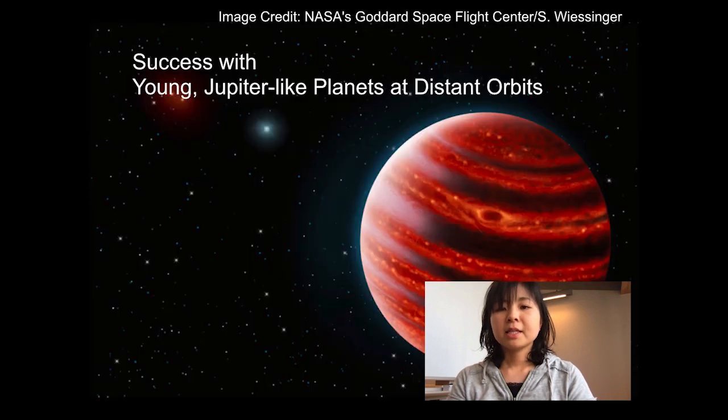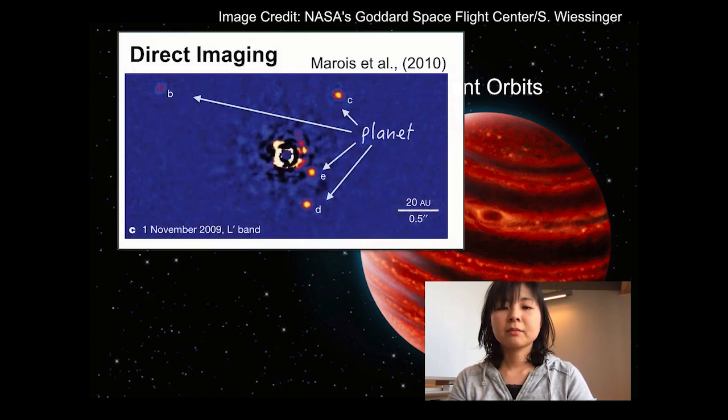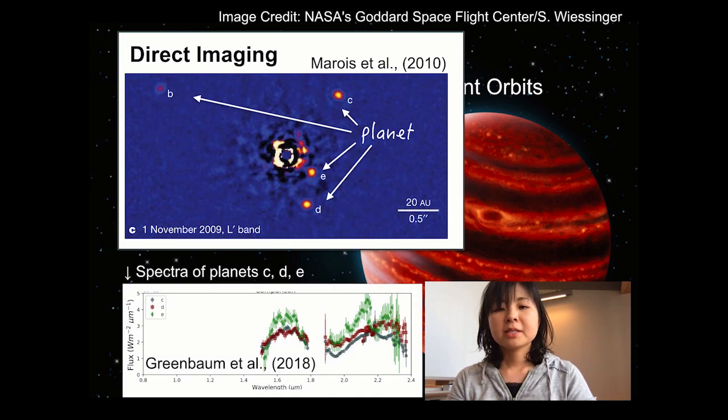In the past decade, direct imaging has been successful for young, luminous, giant gaseous planets at wide orbit. Earth-like planets are about ten times smaller in diameter and much fainter than these successful targets. The efforts are ongoing to achieve the high suppression level to be able to detect an Earth twin.